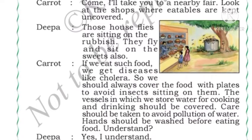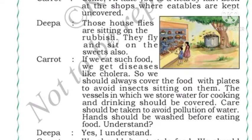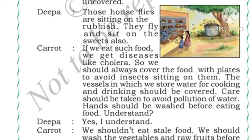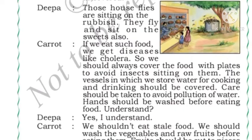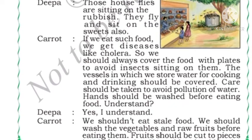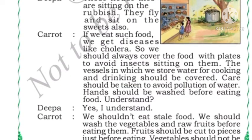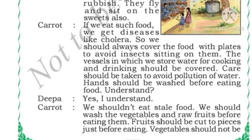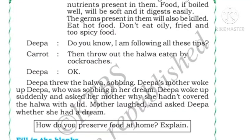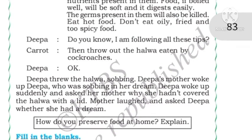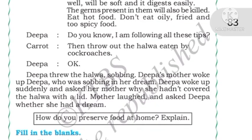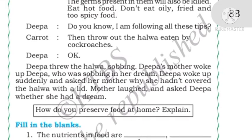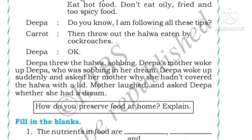We should take care to avoid water pollution and wash our hands before eating. We should not eat stale food or food that is open. Wash vegetables and raw fruits before eating, as flies, cockroaches, and other insects may sit on them. Fruit should be cut into pieces just before eating. Vegetables should not be overcooked, as the nutrients and proteins present in vegetables will be destroyed. Food boiled well becomes soft, digests easily, and kills germs present in the food. Do not eat oily, fried, or too spicy food.